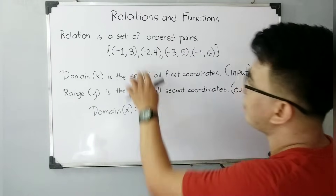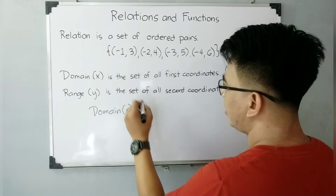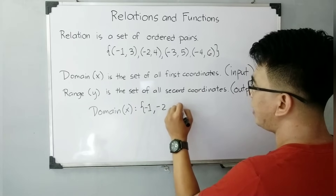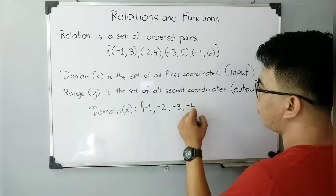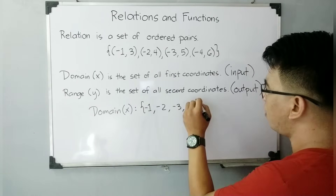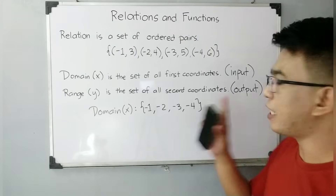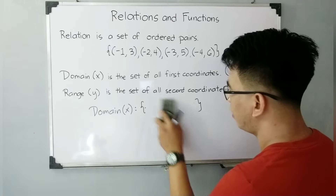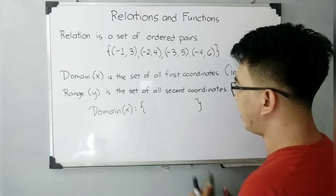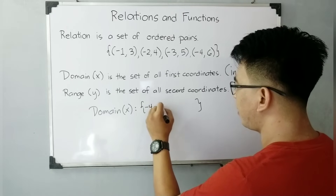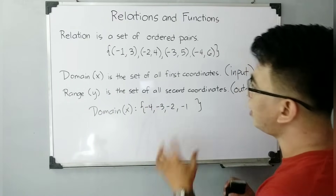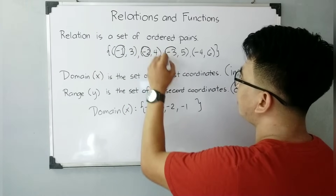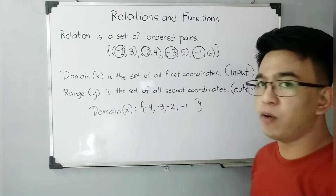So from the given relation, the domain is negative 1, negative 2, negative 3, and negative 4. That is our set of all first coordinates — that is what we call our domain. You can also rearrange it in ascending order: negative 4, negative 3, negative 2, and negative 1. These are the first numbers taken from the ordered pairs.